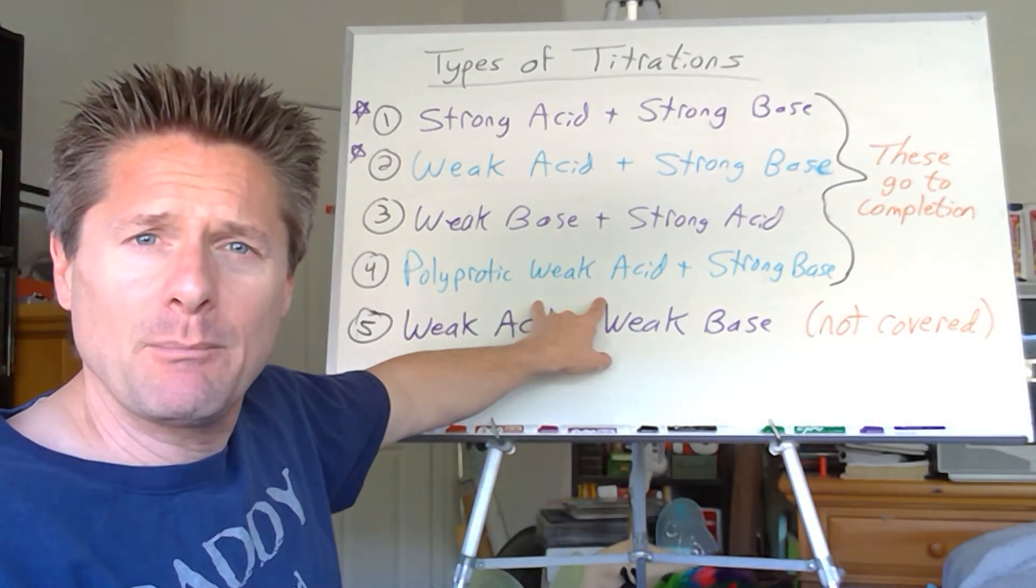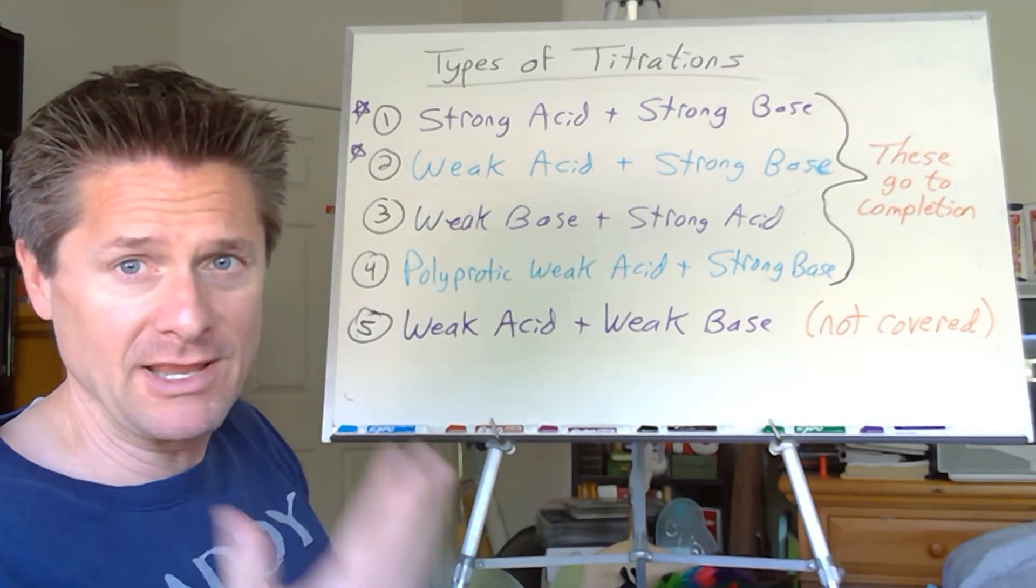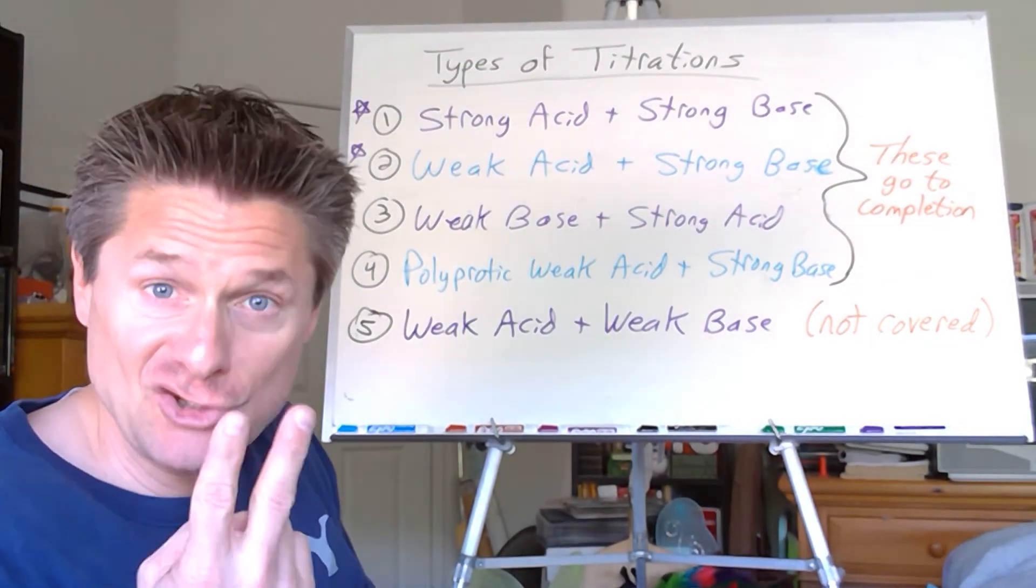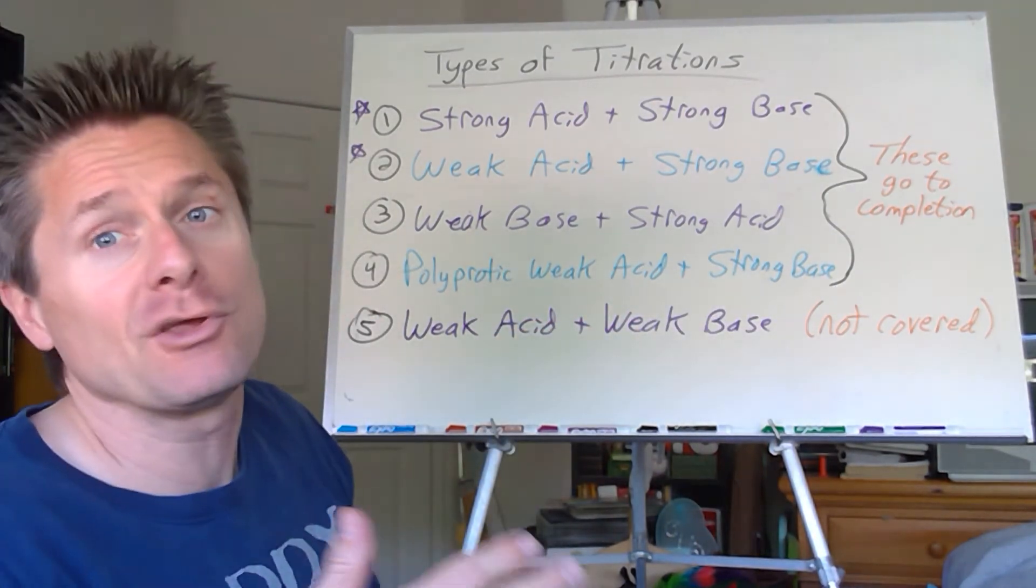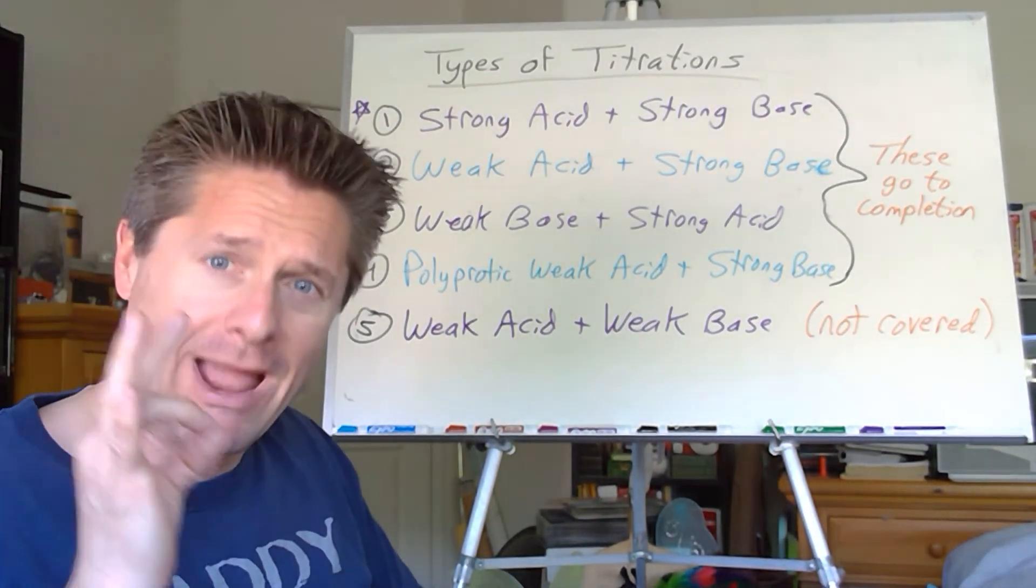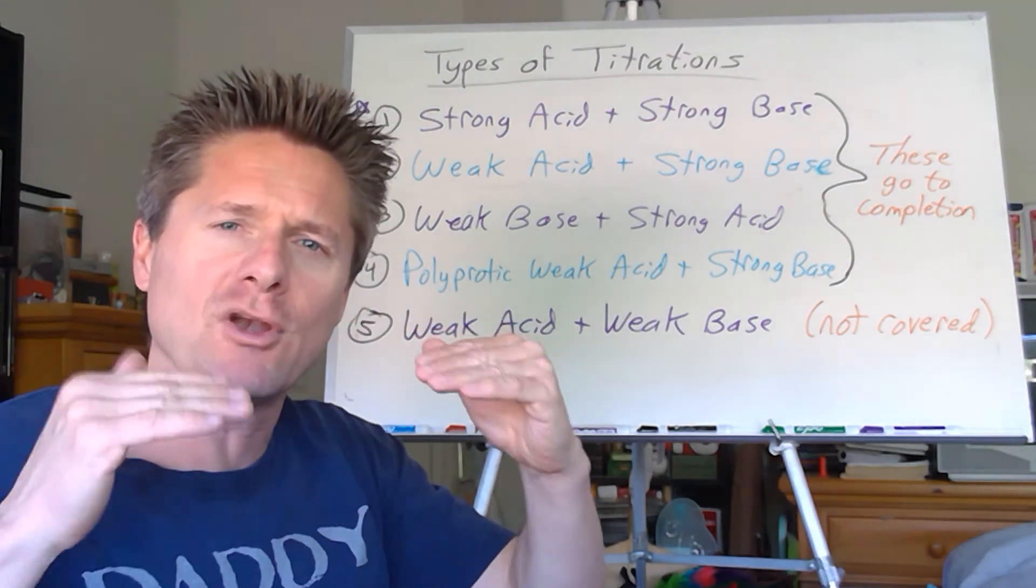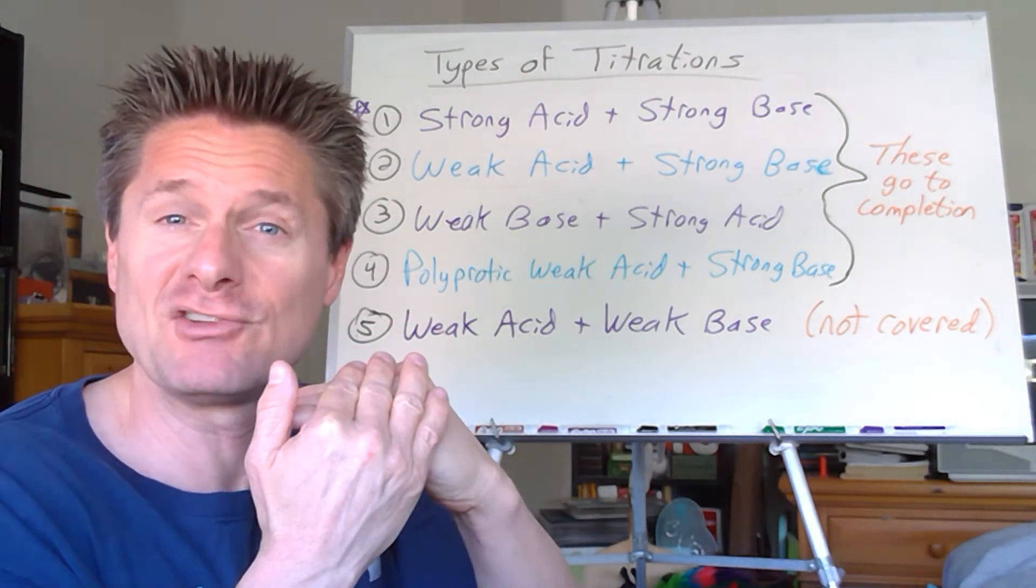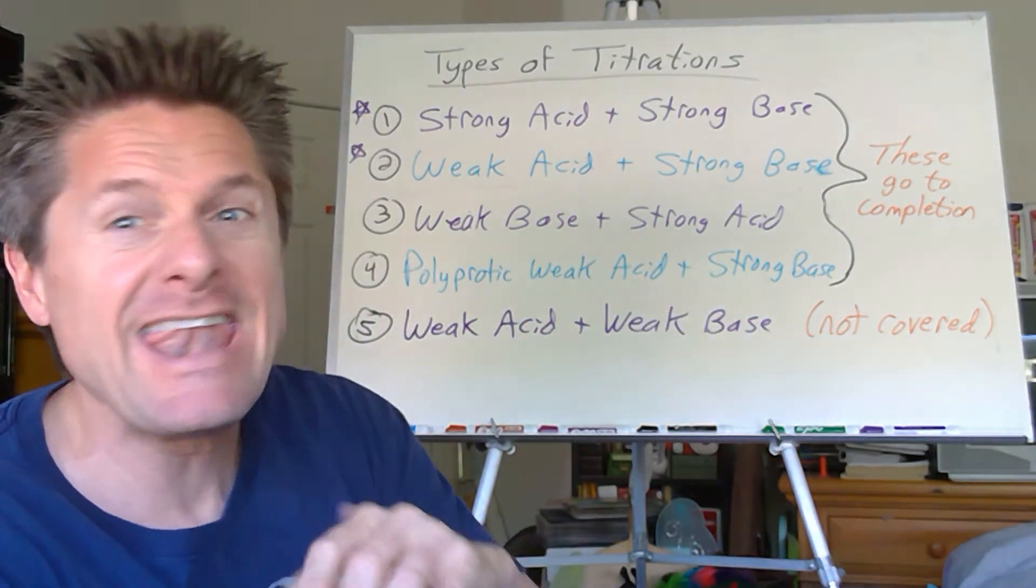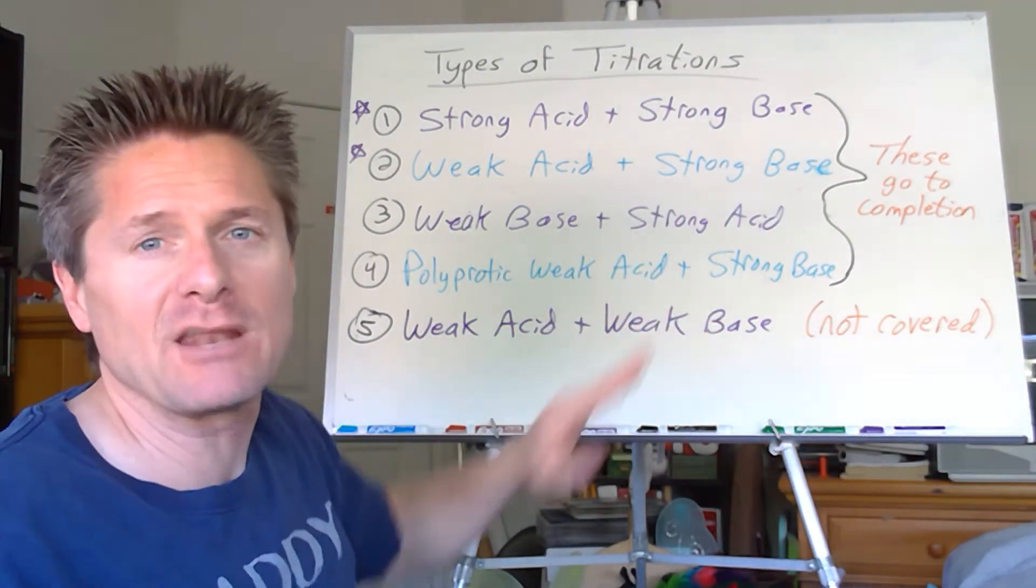Number four, you may have seen a polyprotic weak acid. All of these are monoprotic with one acidic hydrogen, HCl, HNO3. A polyprotic one would be like H2SO4 or oxalic acid, H2C2O4. It's got two acidic hydrogens. As long as you're reacting it with a strong base, it's still going to drive to completion. But titration curves, tracking how the pH changes over time, that's going to be a lot more complicated because it goes in steps. You'll hit that first equivalence point where it neutralizes the first acidic hydrogen, and then you'll get a second equivalence point when it neutralizes the second acidic hydrogen.